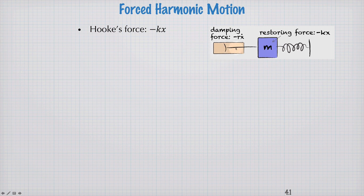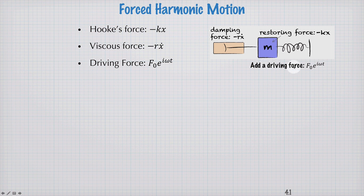A damping force, a viscous damping force. Here I've drawn a piston pushing through some fluid to give negative r times the velocity. And now we add our driving force, f0 e to the i omega t. So f0 is the amplitude, and the real part of e to the i omega t will give us a cosine function.